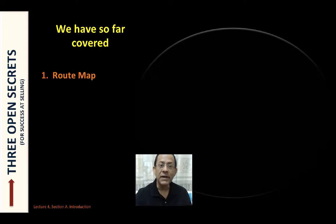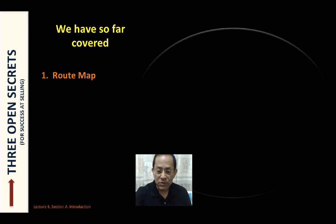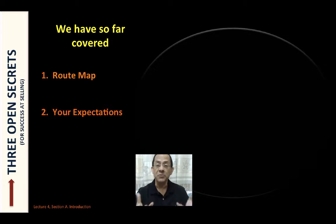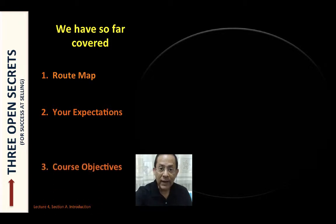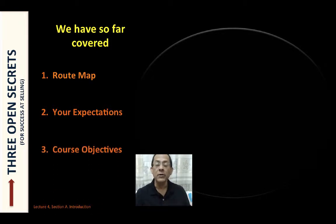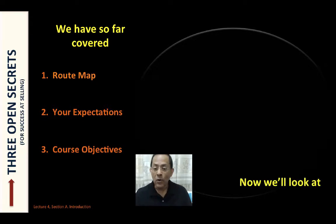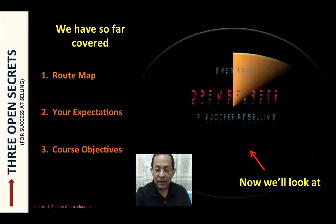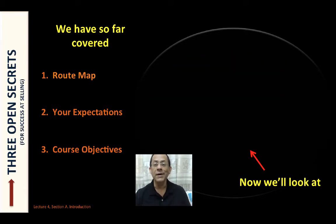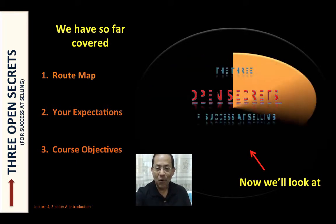So far we have covered: first, the route map, which took you through an overview of the course. Then you put in your expectations from this course — I believe you've put it to one side to look at once the course is over. And of course we also went through the course objectives.